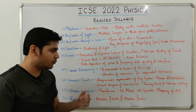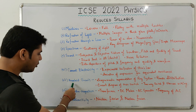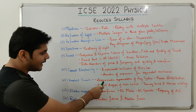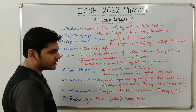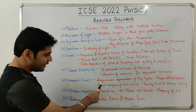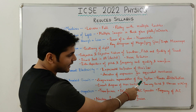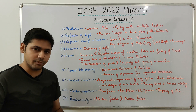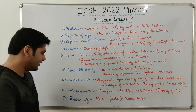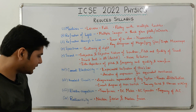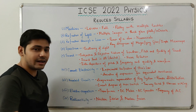Next, from the chapter Household Circuits, four topics have been removed: the diagrammatic representation of the ring system, power distribution, the circuit diagram of the main switch, and two-way switch and staircase wiring. You don't have to study these four topics from Household Circuits.